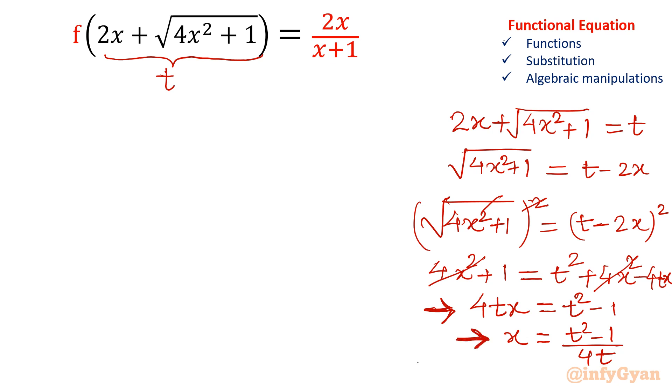Now this x I will put in the right hand side. So let us put left hand side will be as you considered t. So it will be t equal to. Now 2x, x means what we calculated. We will put here t square minus 1 over 4t divided by x plus 1. So t square minus 1 over 4t plus 1. Now we have to simplify to find out fx. Now how we will simplify?